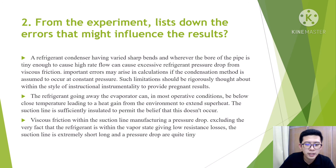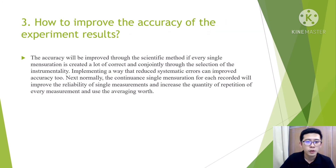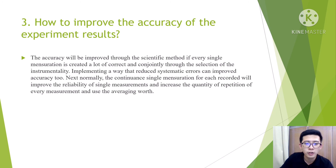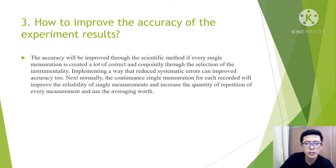Viscous friction in the suction line creates a pressure drop, though losses are quite small since the refrigerant is in vapor state and the suction line is short. To improve accuracy, every measurement should be made more carefully and the selection of instrumentation should be considered. Implementing methods that reduce systematic errors and taking continuous repeated measurements for each recording will improve reliability. Increasing the number of repetitions and using average values also helps.